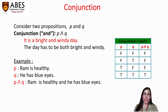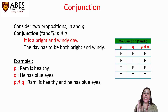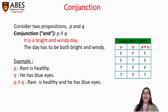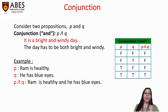Next is conjunction. Consider two propositions P and Q. When we combine those two propositions with the word 'and,' that is known as conjunction. For example, 'It is a bright and windy day' — the day has to be both bright as well as windy. Another example: P is 'Ram is healthy' and Q is 'he has blue eyes.' When we combine them with conjunction, P and Q becomes 'Ram is healthy and he has blue eyes.'